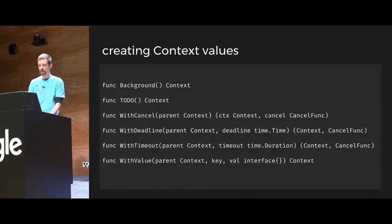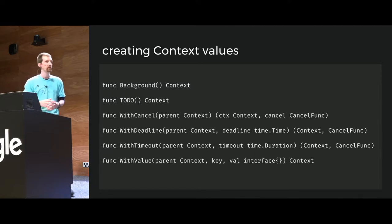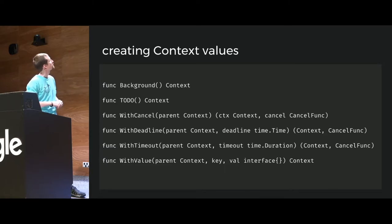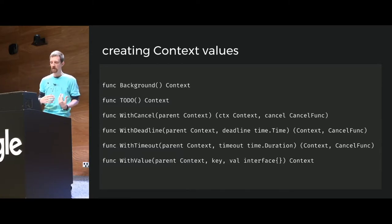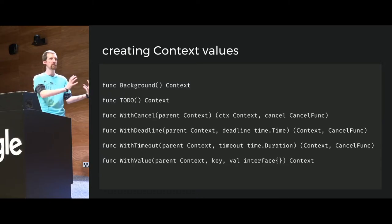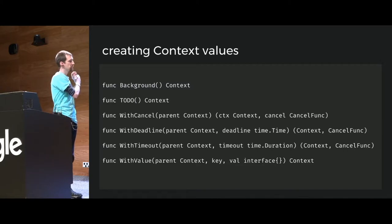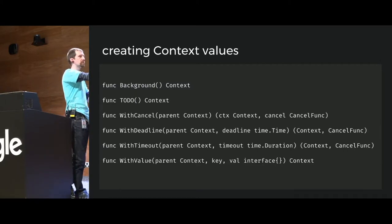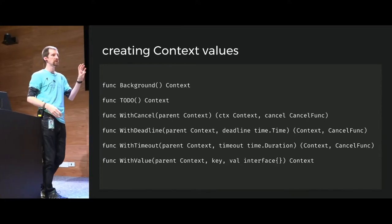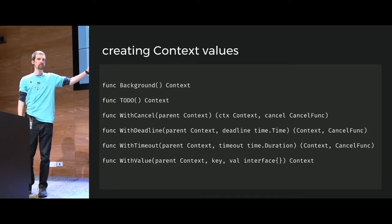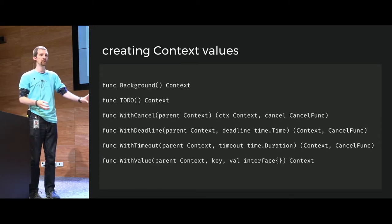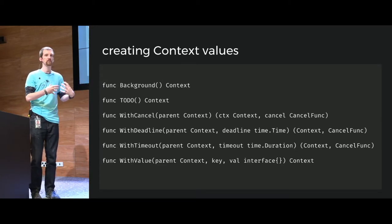Let's talk about how to create context values. The context package exposes a number of functions for this. The first one you use pretty often is background(), which returns the background context. You can imagine an application that accepts a request and then makes several requests to the backend — maybe pinging one application server, then another, then another, aggregating responses back.